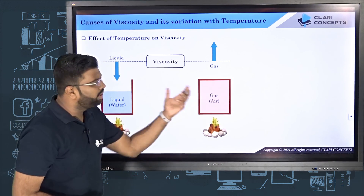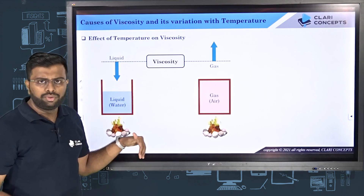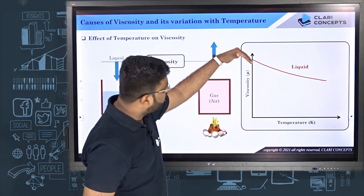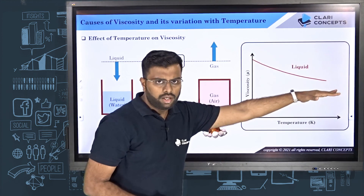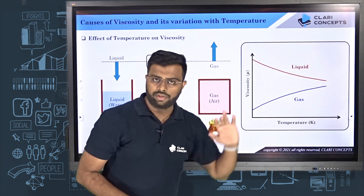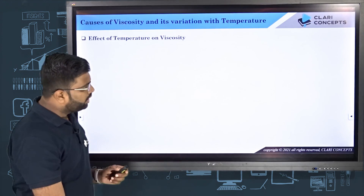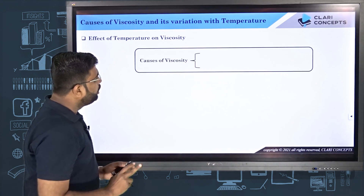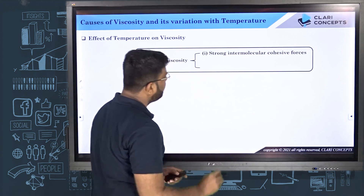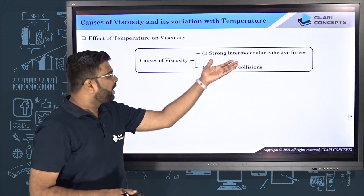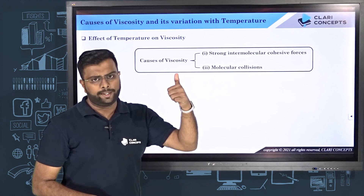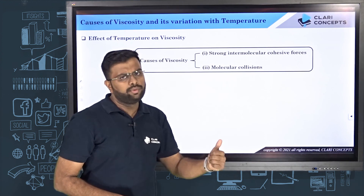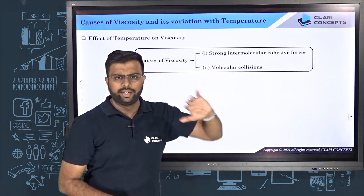Liquid is behaving differently and gas is behaving differently. For liquids, when you increase the temperature, viscosity comes down. For gases, when you increase temperature, viscosity rises. If you plot the graph of viscosity versus temperature for liquid, you will observe that with increase in temperature viscosity will come down. For gases, with the rise in temperature, the viscosity will increase. Now why is this so? Take a closer look at both the causes of viscosity. The major reasons are two molecular phenomena: one is strong intermolecular cohesive forces and another is molecular collisions. Stronger intermolecular forces mean higher viscosity; weaker forces mean lower viscosity. Greater rate of molecular collisions means higher viscosity; lower rate means lower viscosity.